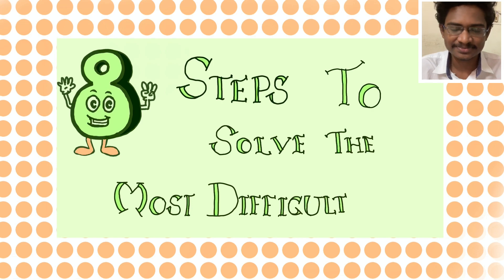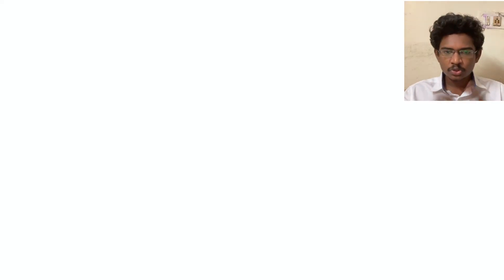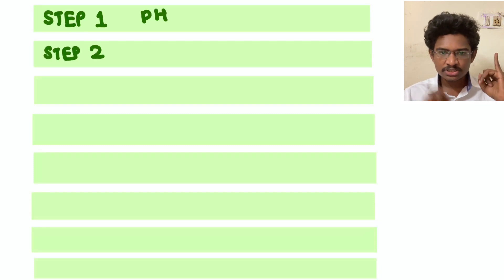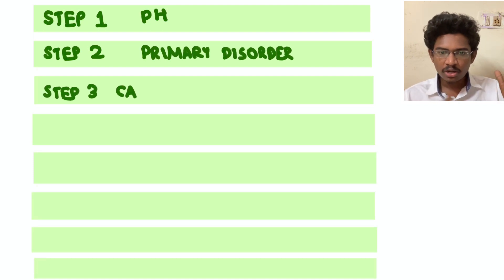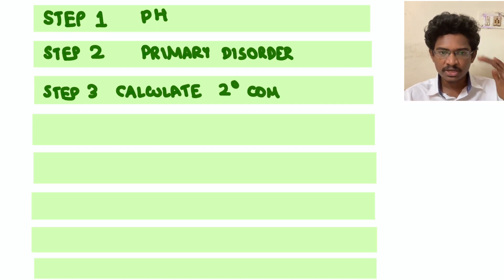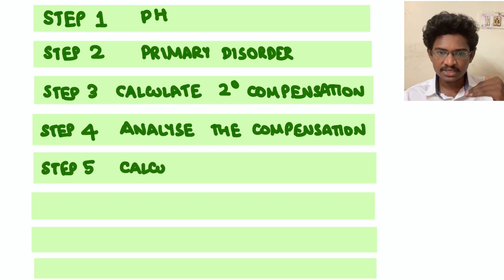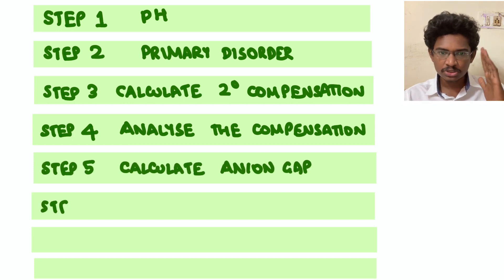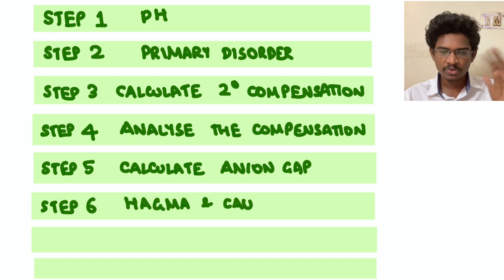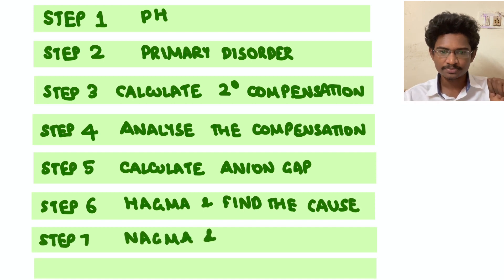Let's brush up with the basics — eight steps. First: pH — acidosis or alkalosis. Next: primary disorder — metabolic or respiratory. Next: calculate compensation. Next: analyze the compensation — completely compensated, partially, or uncompensated. Next: if it is high anion gap metabolic acidosis, find its cause; if normal anion gap, find its cause. Last: delta ratio interpretation.